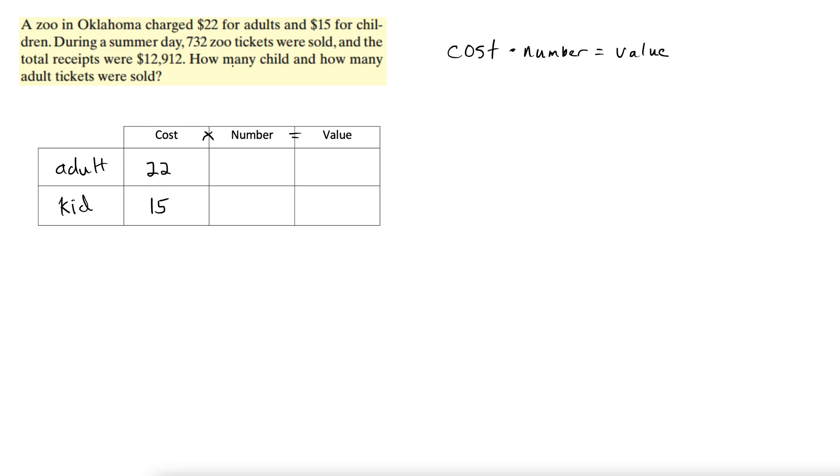Now, we don't know how many adult tickets were sold, so let's let that be x. So just remember that: let x be the number of adult tickets sold. Alright, and now we're only using one variable right now.